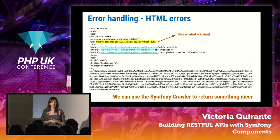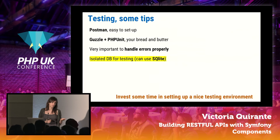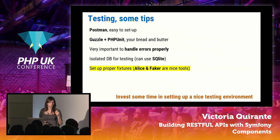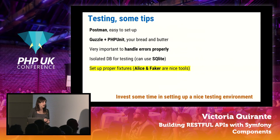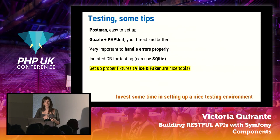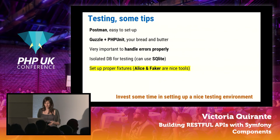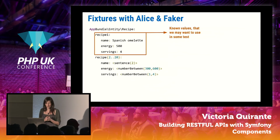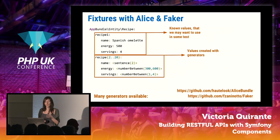It's basic to have an isolated database for testing. Using SQLite is a good option because you lose less time dropping the database. Related to this, it's extremely important to have good fixtures for your tests — good, realistic fake data. Two tools that are very useful for this are Alice and Faker. We use them not just for APIs but for every project. It's completely different to show a new project with nice fixtures versus one without. Faker provides many generators that produce very real-looking fixture data.